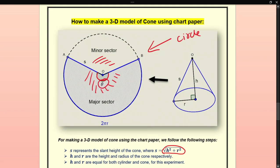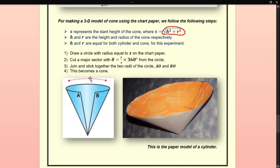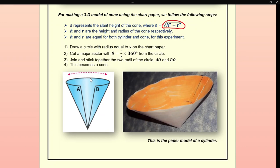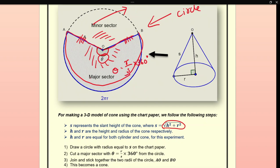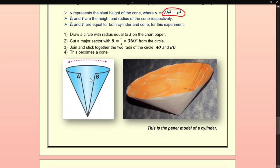So this theta = (r/s) × 360° is cut from the circle. One radius and another radius of the major sector are identified — the minor sector portion is removed. The remaining major sector is then joined by sticking its two radii together, and you will see it forms a cone-type structure. This is the TLM made using paper.